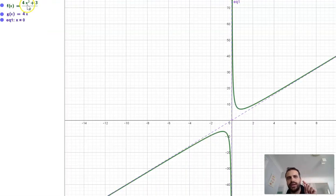This is the function 4x squared plus 3 over x, and you can see it has two asymptotes, one at x equals 0, and another slant or oblique asymptote at 4x. We're going to have to figure out how to find those two asymptotes, and then maybe also deal with these turning points that are happening here.